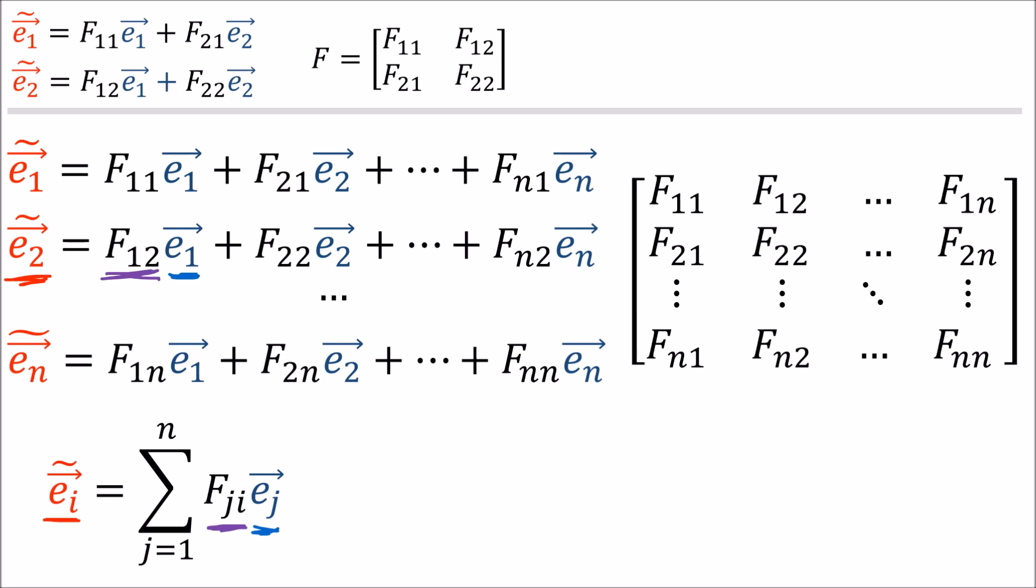In the previous video, I accidentally wrote this with F_{i,j} instead, but that's wrong. This should be F_{j,i}.